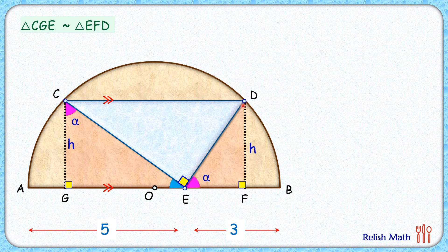As the triangles are similar, thus the ratio of sides will be equal. So we can say here CG upon GE will be equal to EF upon FD.